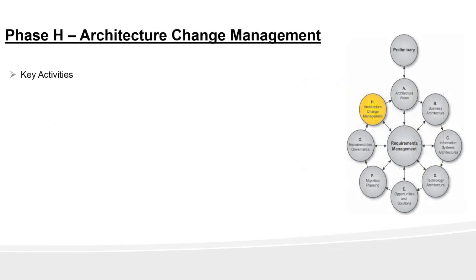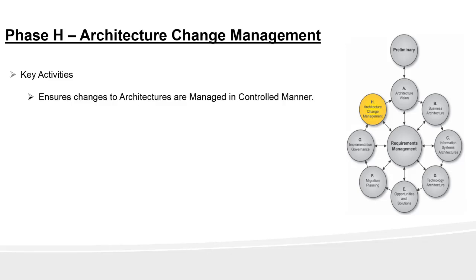Hi there! Congratulations! We have reached the last phase of the ADM cycle and that's Phase H: Architecture Change Management. Though we will still be covering the requirements phase after this. Phase H ensures that the changes to the architecture are managed in a controlled manner. This phase kicks off when the implementation is done and the solutions are rolled out.